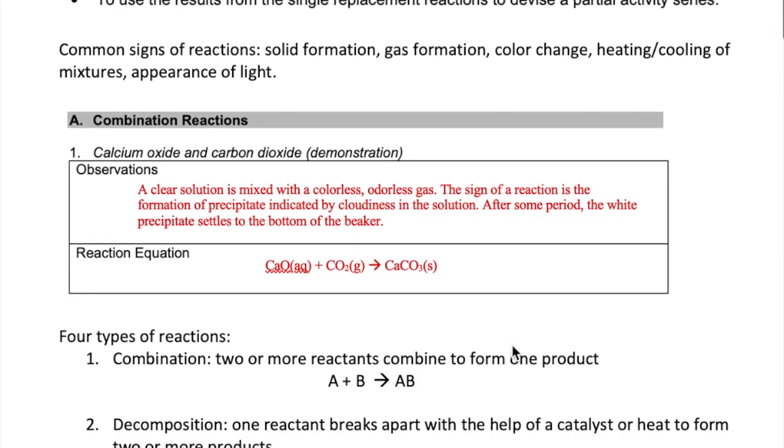Below is an example of what you'll have to complete in your lab report. Here a reaction between calcium oxide and carbon dioxide was carried out and you observe what the reactants look like, which are just a clear solution and a colorless and odorless gas. Once the reactants are mixed, you observe that the solution becomes cloudy, a sign that a solid has been formed. The solid eventually settles to the bottom of the test tube.